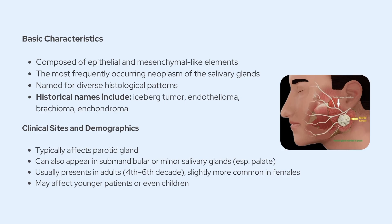Pleomorphic adenoma, which is also sometimes called a benign mixed tumor, is actually the most frequently occurring neoplasm of the salivary glands. It makes up more than half of all salivary gland tumors, especially in the parotid and submandibular glands. The term 'mixed tumor' comes from its diverse histologic appearance — you'll often see a combination of epithelial and mesenchymal tissue patterns all within the same lesion.